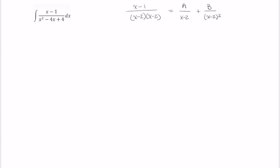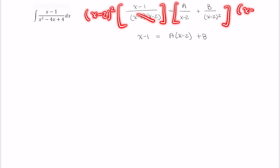This is equivalent to x minus 1 equals A times x minus 2 plus B. If you are having trouble seeing what I did here, take a moment and multiply both sides by the common denominator of x minus 2 squared.